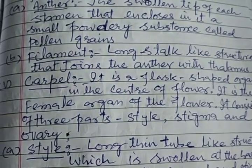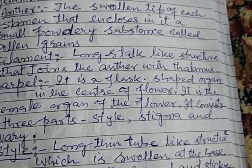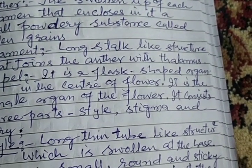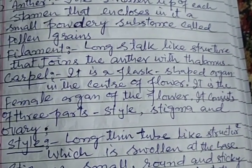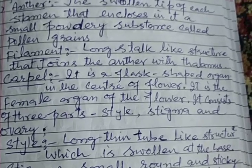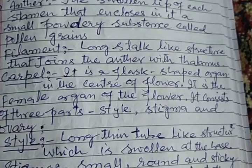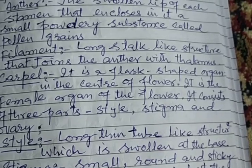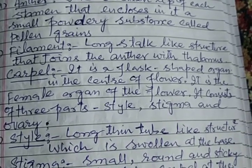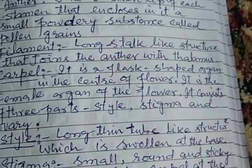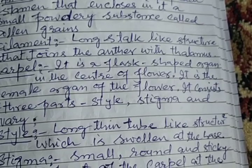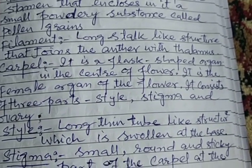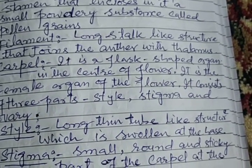Number five — carpel. It is a flask-shaped organ in the center of the flower. It is the female organ of the flower. It consists of three parts: style, stigma, and ovary.